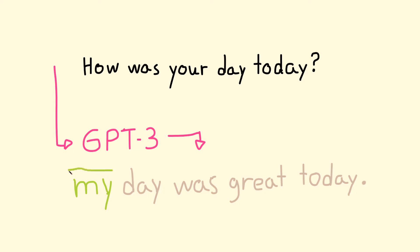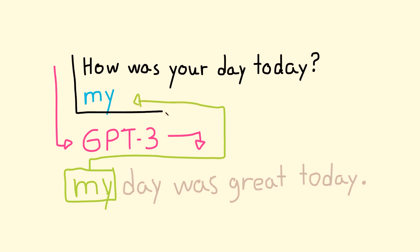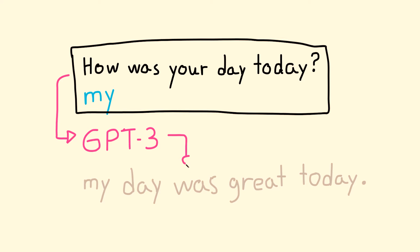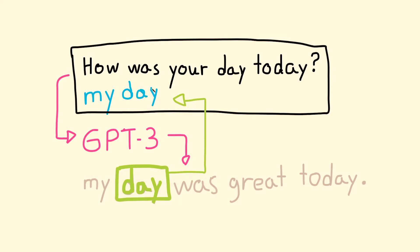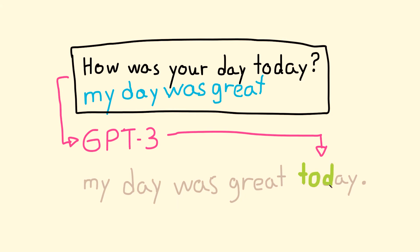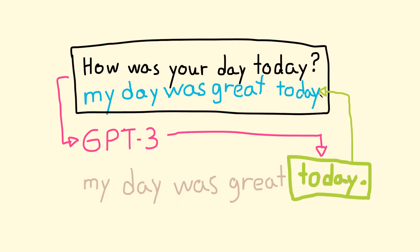We then take the output word 'my' and feed it back into GPT-3. So now the input is 'how was your day today? My.' GPT-3 will output the next word, which is 'day.' We take 'day' and feed it back to the input, giving GPT-3 'how was your day today? My day.' We keep repeating this process until we get: 'My day was great today.' This is how you produce more than one word from GPT-3, even though it only outputs one word at a time.